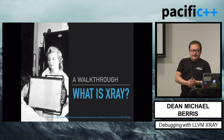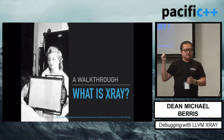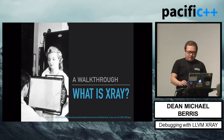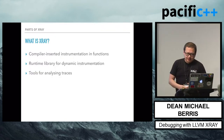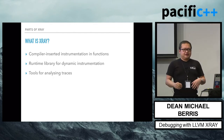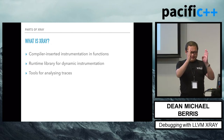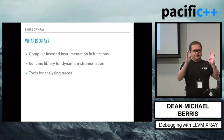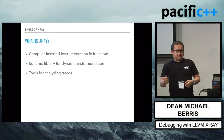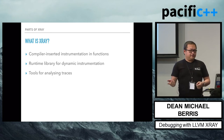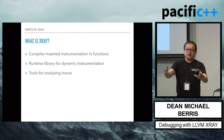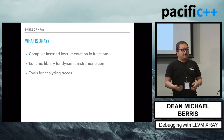So what is X-Ray? X-Ray is compiler-inserted instrumentation in functions. It's basically the compiler putting stuff in places where you shouldn't be able to notice it's there. It's also a runtime library that you can turn on and off dynamically. And it's a collection of tools that allow you to get traces from these systems and analyze them offline.